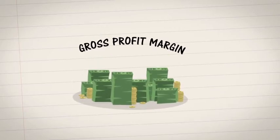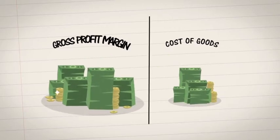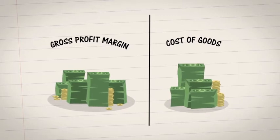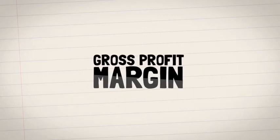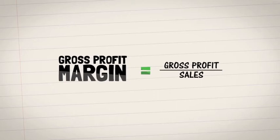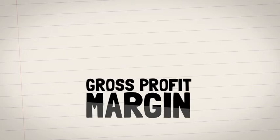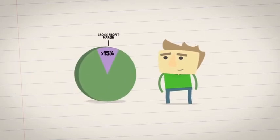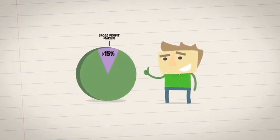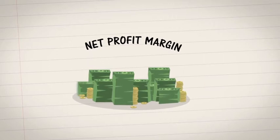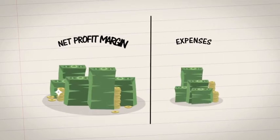The first is gross profit margin. This represents the proportion of money left over after subtracting the cost of goods sold. To calculate gross profit margin, take gross profit and divide by sales. The higher the margin, the more profitable a company is. Margins of 15% or more are considered good.